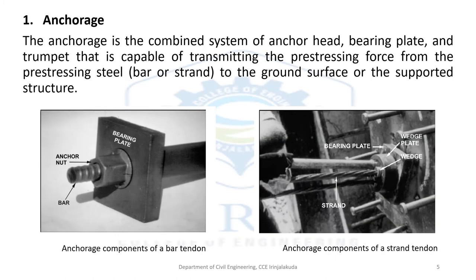Here are pictures of anchor heads. The first picture shows the anchor head components of a bar tendon, and the second picture shows the anchor head component of a strand tendon. The anchor head is the combined system of anchor head, bearing plate, and trumpet that is capable of transmitting the pre-stressing force from the pre-stressing steel to the ground surface or the supported structure.